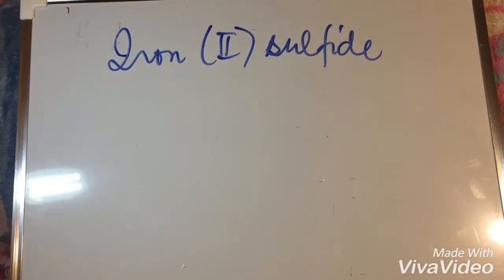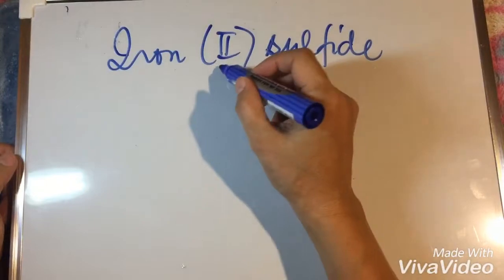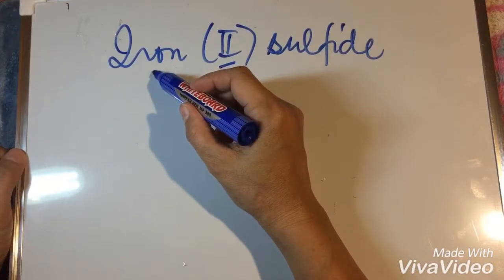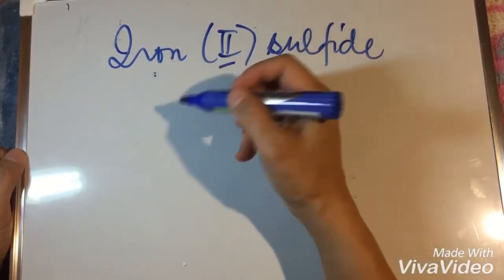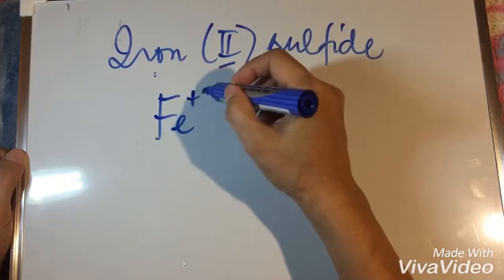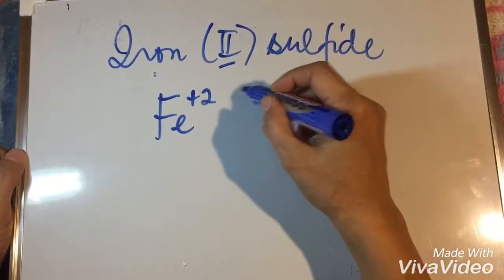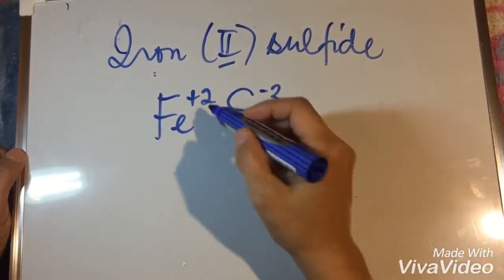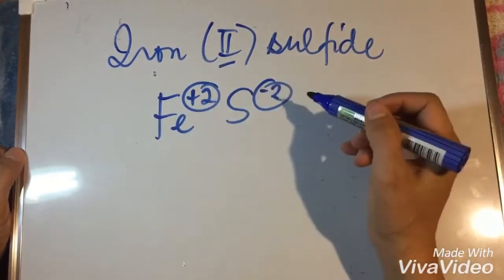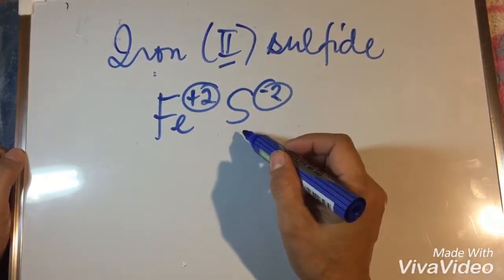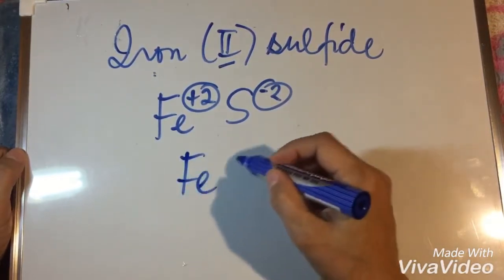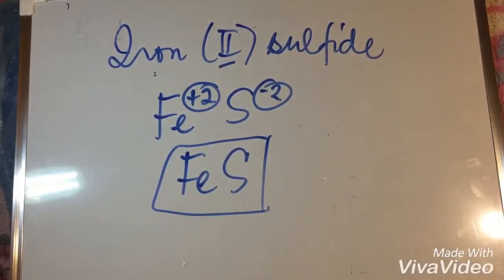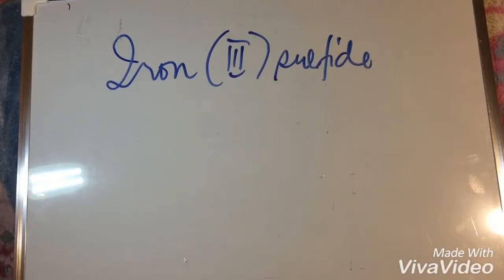Another example is iron(II) sulfide. This time, you can see this Roman numeral. This is only used when a metal has two or more oxidation numbers. This means that iron used positive two and sulfur negative two. Since we also have equal charges, meaning we do not need any more subscript, therefore, the final formula will be FeS for iron(II) sulfide.